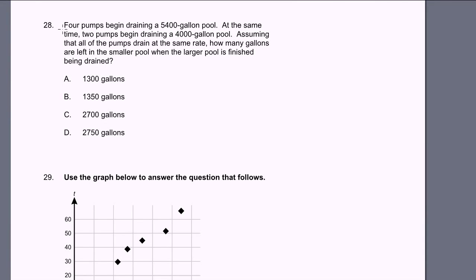We're on problem 28. Four pumps begin draining a 5,400 gallon pool. At the same time, two pumps begin draining a 4,000 gallon pool. Assuming that all of the pumps drain at the same rate, how many gallons are left in the smaller pool when the larger pool is finished being drained? Notice they didn't tell us how fast the pumps work.